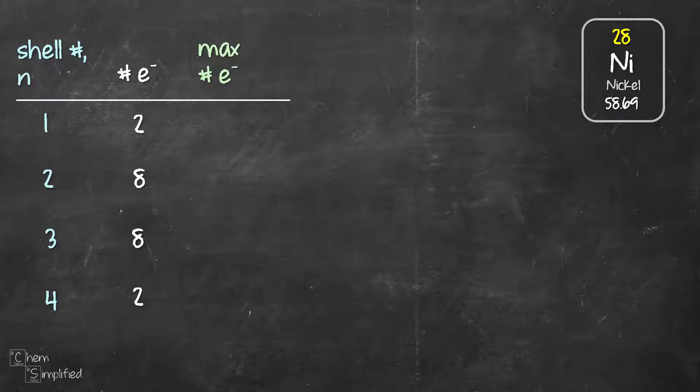There's a formula that we can use which is 2n squared, where n is the shell number. Plugging n into the formula will give us 2, 8, 18 and 32.